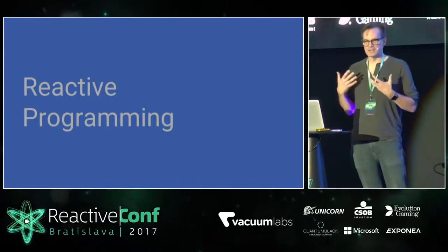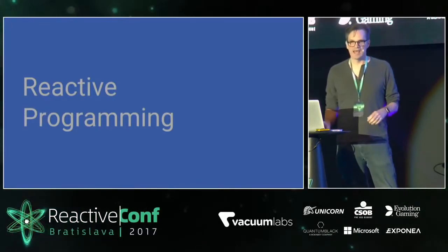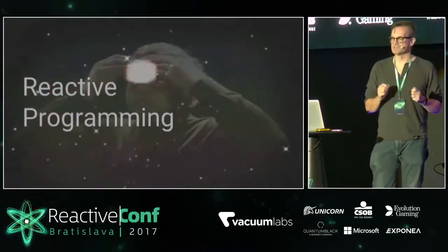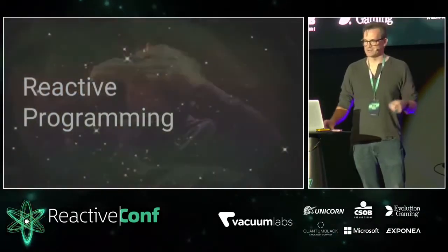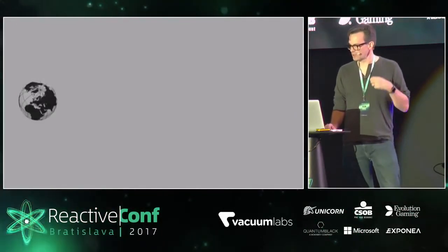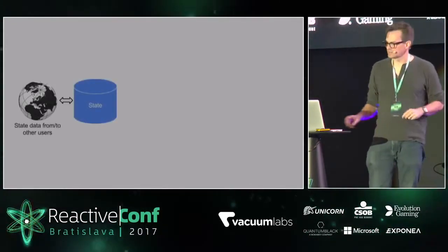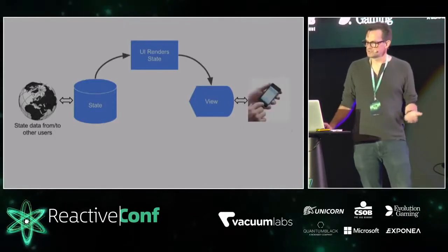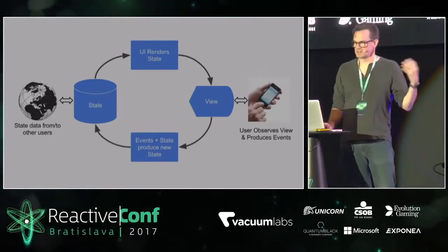I started looking at how React worked, and Elm, and all of these kinds of systems, and they kind of blew my mind, because they aligned really perfectly with this idea of your data always changing. My model of reactive programming: you start with some piece of state coming from all the users in the world, produce the state of your application. The UI renders that state to create a view, which the user then interacts with to produce events that are combined with the state to produce a new version of the state, and the cycle continues.